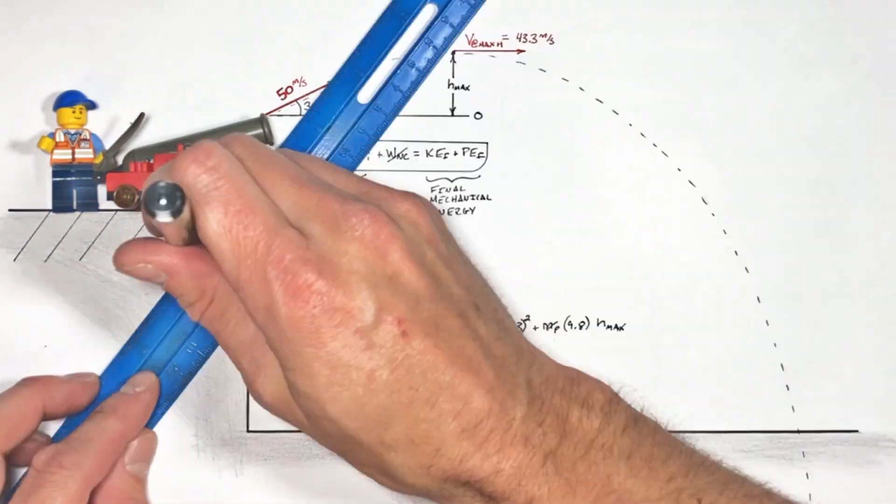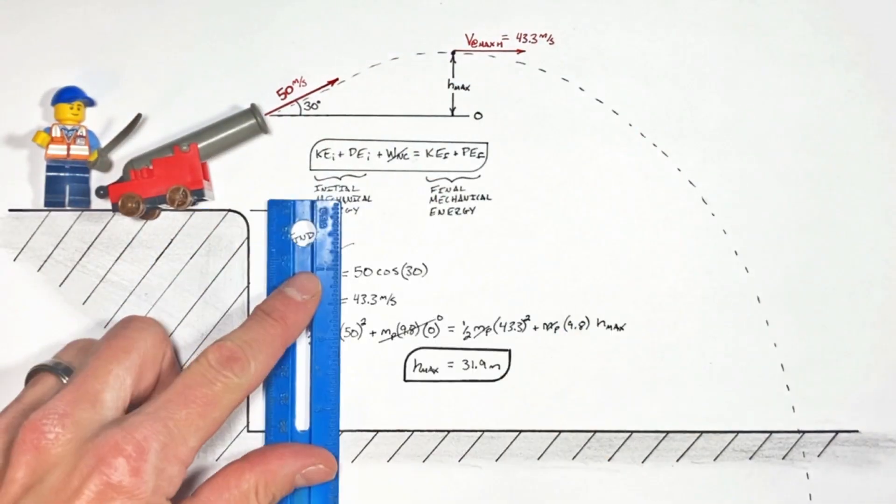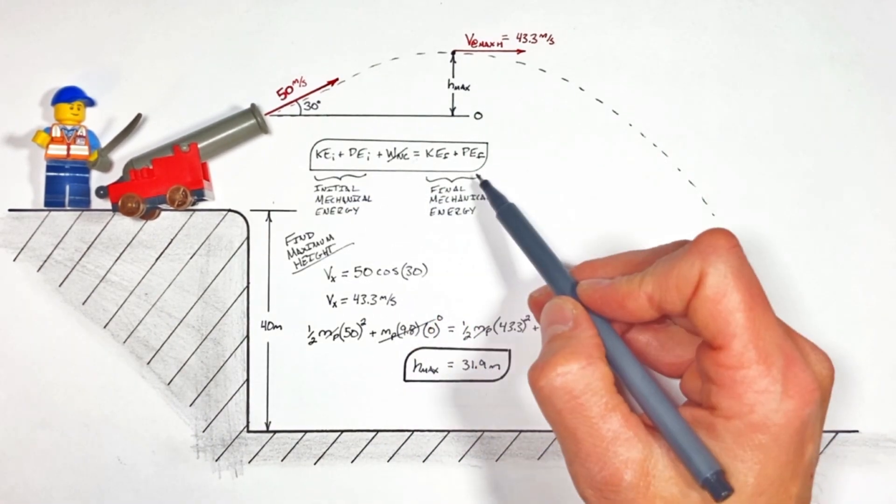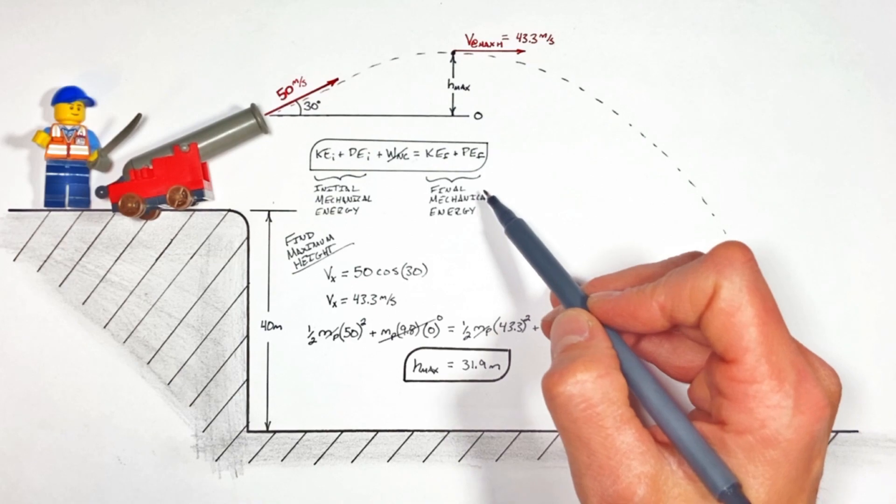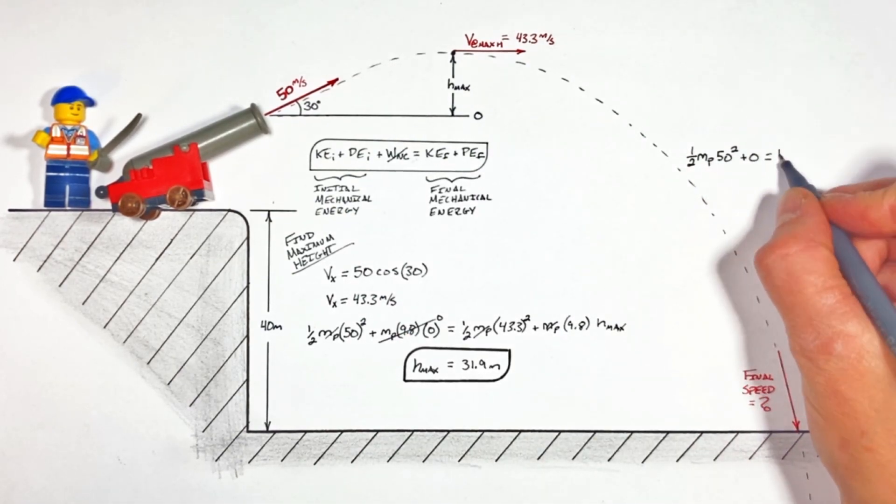Let's say we're given that this cannon was fired off a 40-meter tall cliff and we wanted to solve for the speed of the projectile when it lands. We're still going to be able to apply the conservation of mechanical energy, so the initial mechanical energy is going to equal the final mechanical energy.